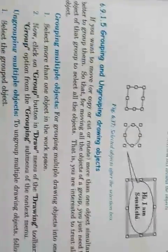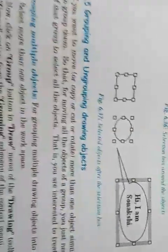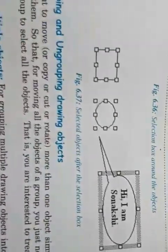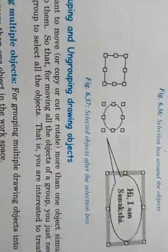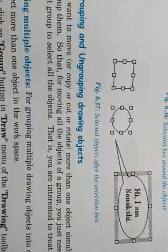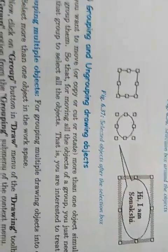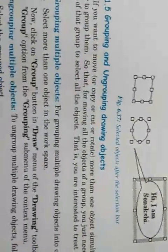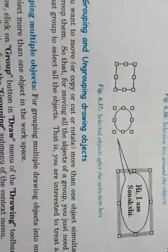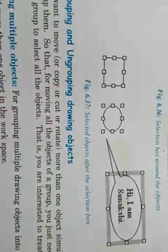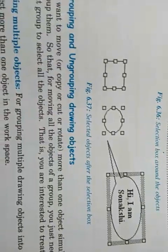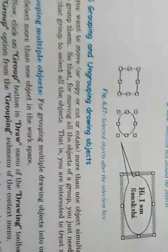When formatting is completed and you want to ungroup the elements, there is an Ungroup option. Just right-click on the objects and select Ungroup.